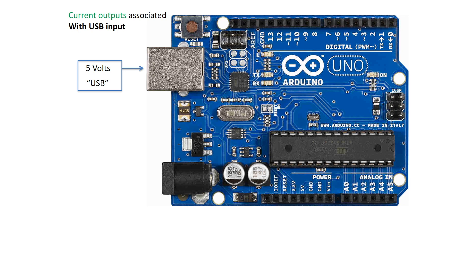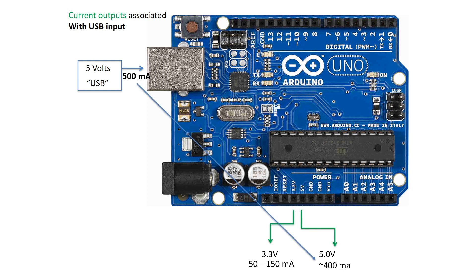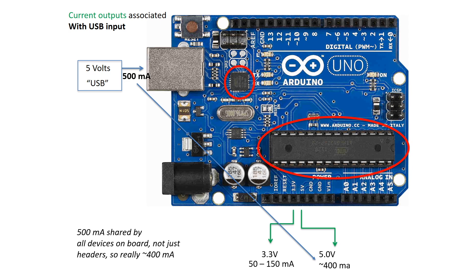Let's talk about the power outputs associated with the power pins along the bottom of the board, restricting our discussion to the output available when powering the Arduino using a 5 volt USB input from our computer. That input provides our Arduino with 500 milliamps of current at 5 volts. We can tap that current through these two pins at either 3.3 or 5 volts, depending on which pin we use. The 3.3 volt pin will allow us to tap up to 150 milliamps, which is the limit of the 3.3 volt regulator on the board. The 5 volt pin will deliver up to 400 milliamps — but not the full 500 milliamps — because the 500 milliamps are shared by all devices on the board, not just the headers.